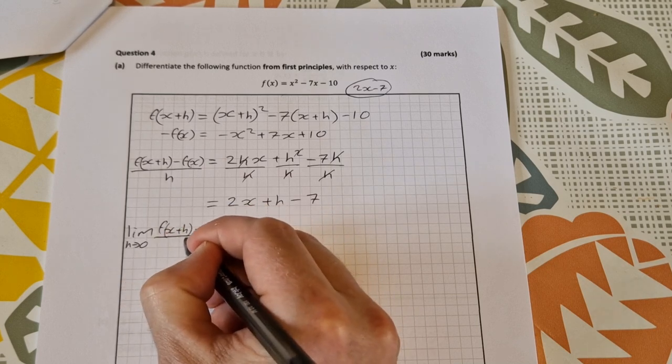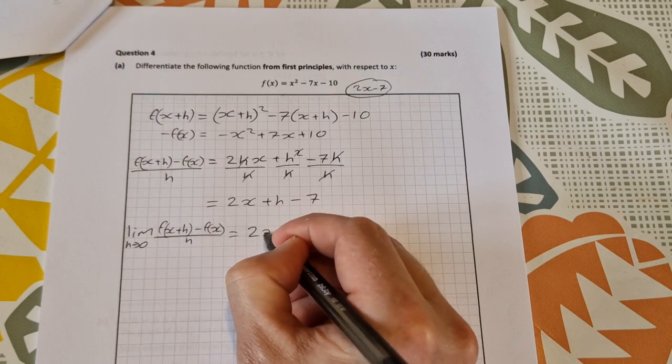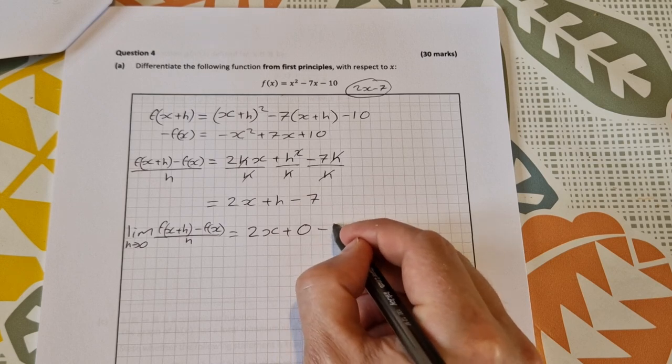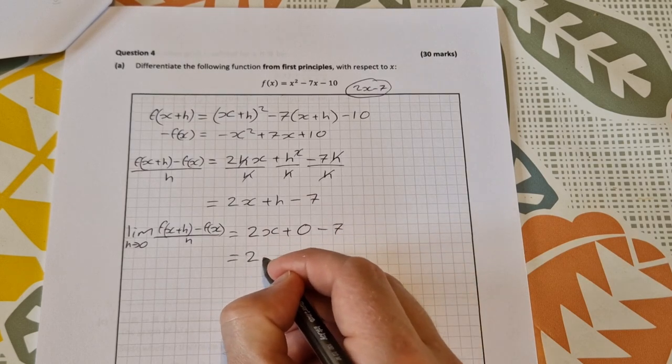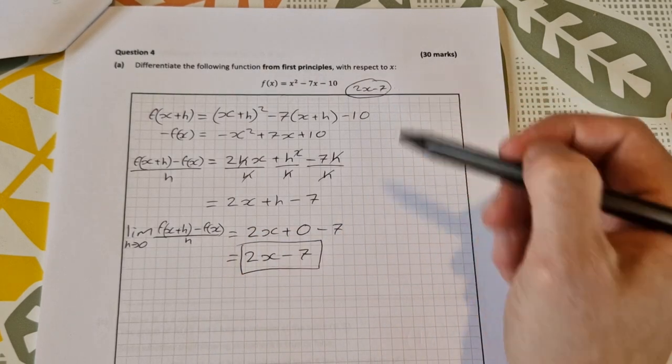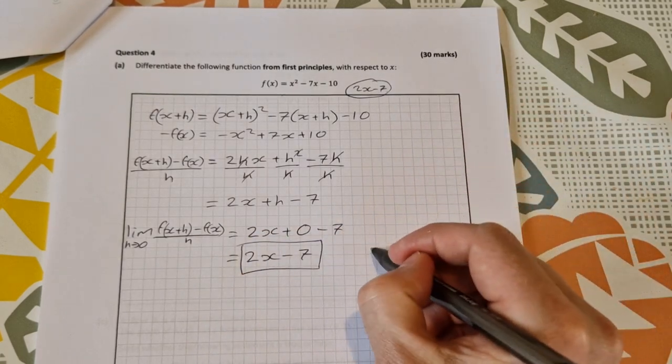That equals 2x - 7, which is what we were expecting to get from the start. It's worth 10 marks.